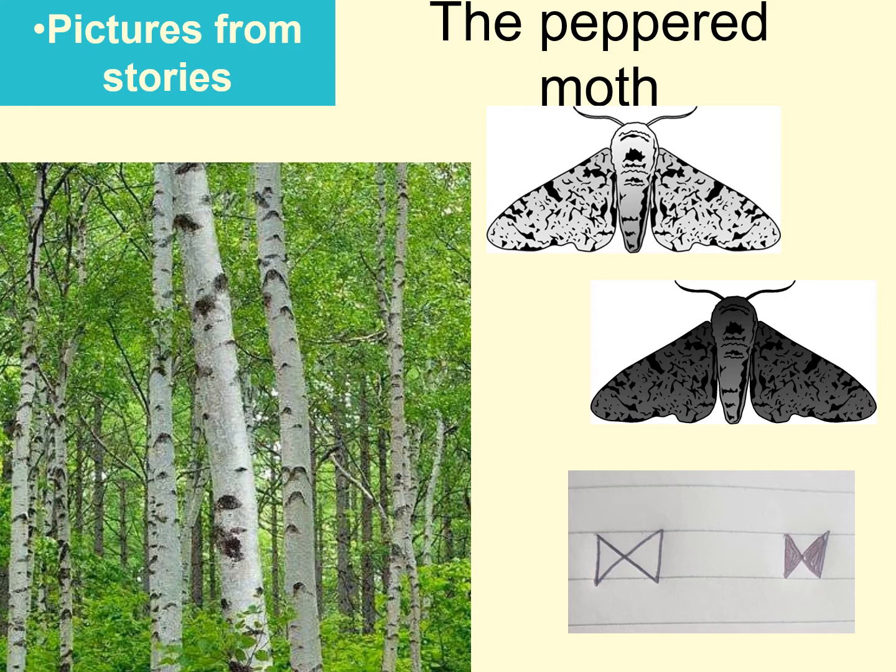Number one: there are two varieties of peppered moth — a dark coloured moth and a light coloured moth. Number two: the light coloured moth sits on the white birch tree — it can't be seen, it's camouflaged. Number three: birds can't see them, so they are not eaten.